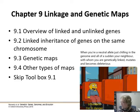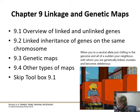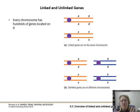There is one chunk we're not doing — we are skipping Toolbox 1.9, the crossover suppression by balancer chromosomes. We're not doing that, so everything else in the chapter, yes. Every chromosome has hundreds, if not thousands, of genes located on it.